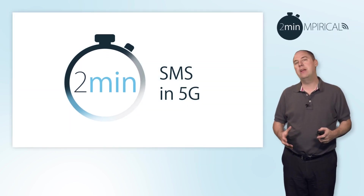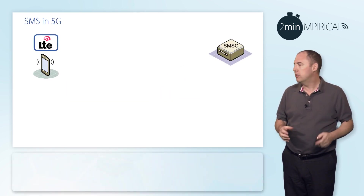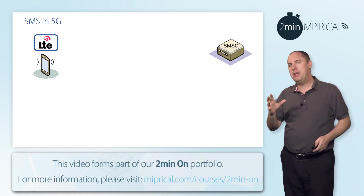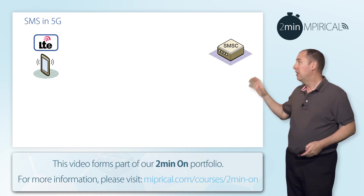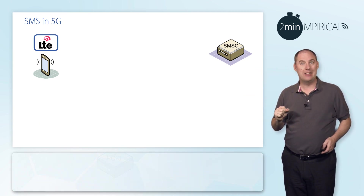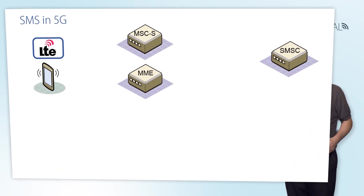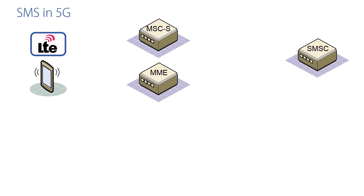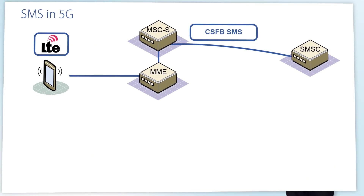SMS in 5G is very similar to the concept of SMS in 4G. So let's have a look at how it works. First of all, let's just recap. Here we have a 4G LTE system sending SMS messages via a short message service center. In 4G, we would utilize the services of an MSC server, which is typically a 2G or a 3G service, and would use something called circuit switch fallback. That would allow the SMS to go to the device and back again, and it would interface with the MME, the mobility management entity in the 4G network.